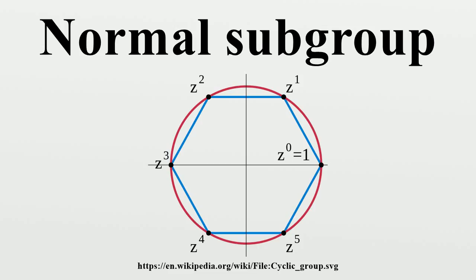It is also easy to see that the kernel of the quotient map from G to G/N is N itself. So we have shown that the normal subgroups are precisely the kernels of homomorphisms with domain G.